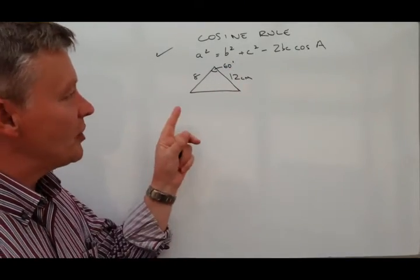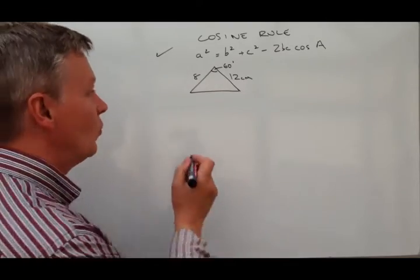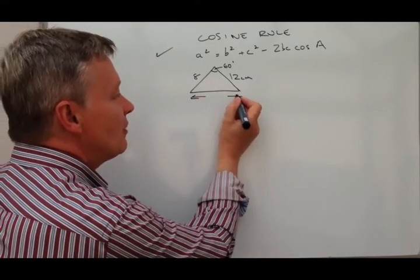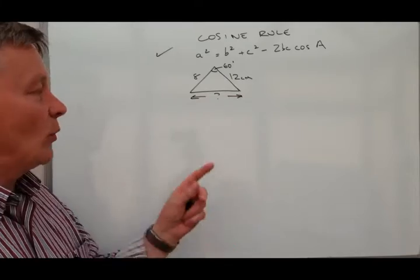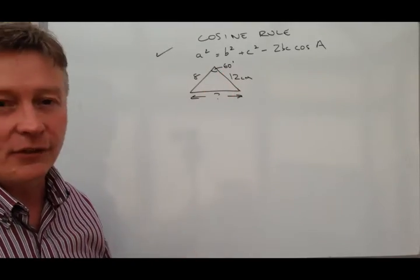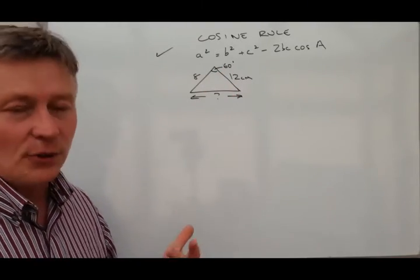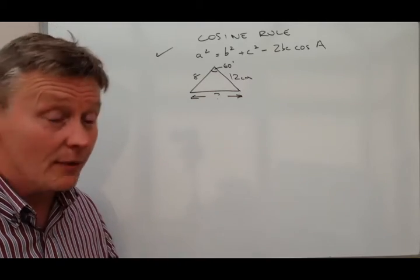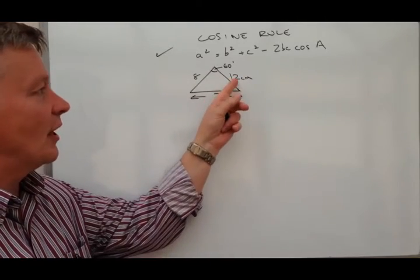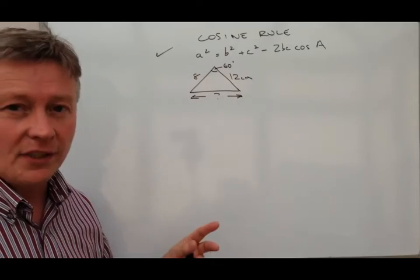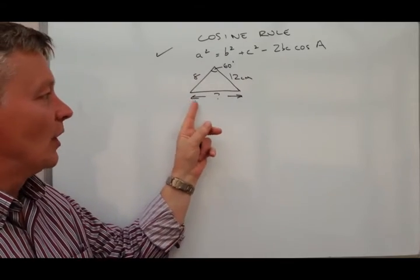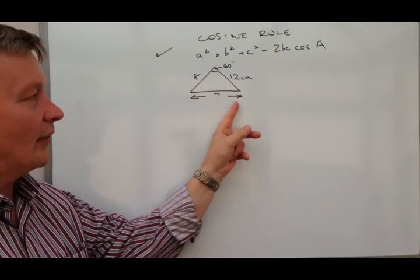Well the question will normally ask you to work out this measurement here, which is opposite the 60 degrees, and that's quite important because in order to apply the cosine rule we need to make sure that we've got two sides and the angle itself in order to work out this length.